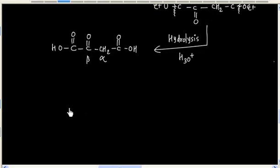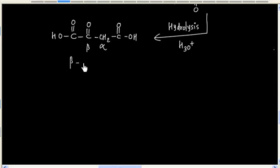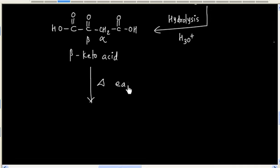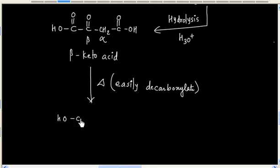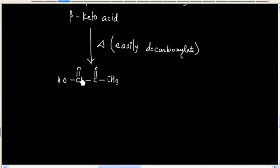Now this is a beta-keto acid. So if this acid is heated, it will easily decarboxylate, and finally we will have this product. This product is an alpha-keto acid, so the final product is an alpha-keto acid.